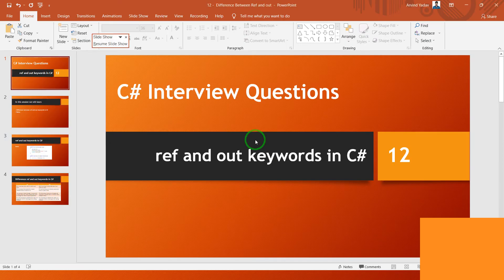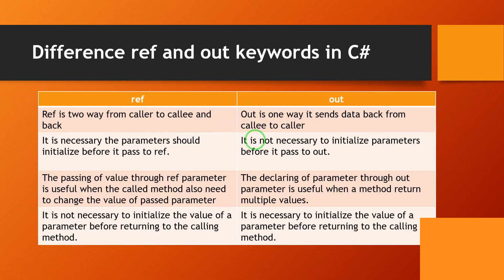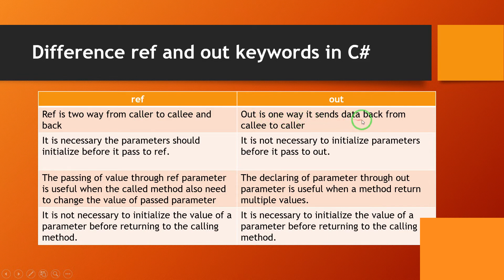These are the differences between ref and out. In the case of ref, data flows two ways — from caller to callee and back. But in the case of out, it is one way — it only sends data back from callee to caller.